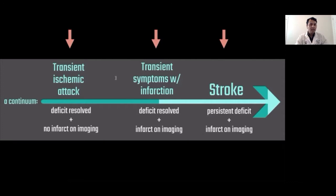It is important to diagnose an event as a TIA, as the annual risk of recurrent ischemic stroke after an initial TIA is 3–4%. In some patients, the risk goes above 10% in the first 7 days after TIA. The estimated 5-year risk is around 24–25% after an episode of TIA. Hence, correct diagnosis and treatment is very, very important.